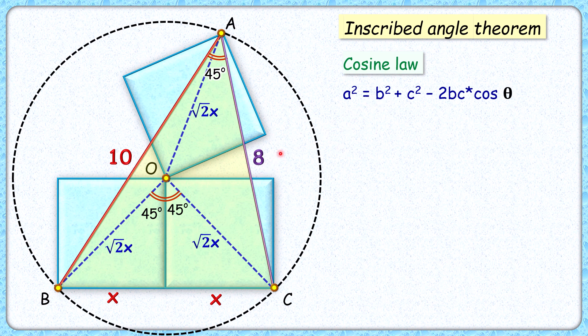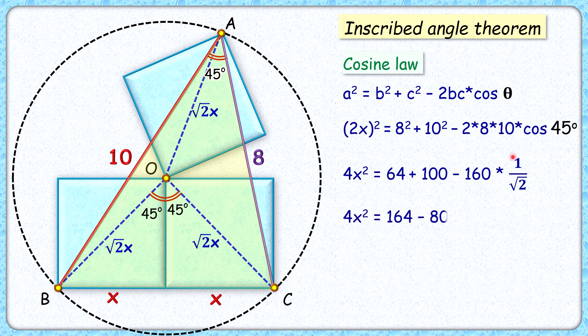b is 8 and c is 10, θ is 45 degrees. Solving it, so LHS this will be 4x² = 64 + 100 - 160 times cos 45° is 1/√2. Simplifying it further: 4x² = 164 - 80√2.